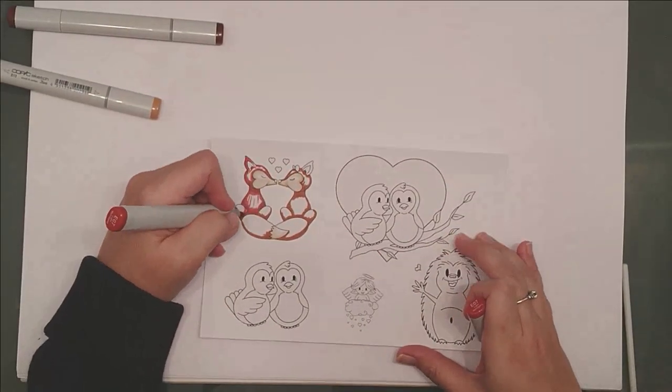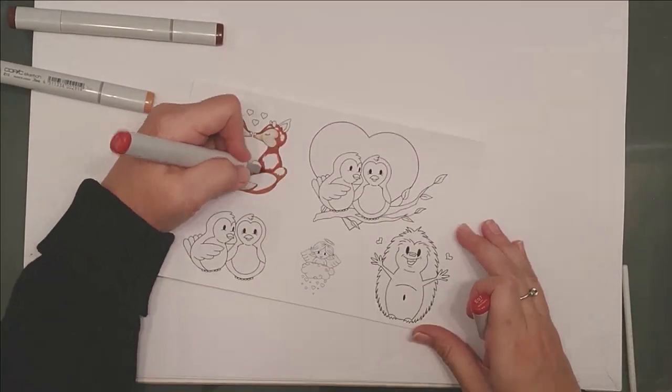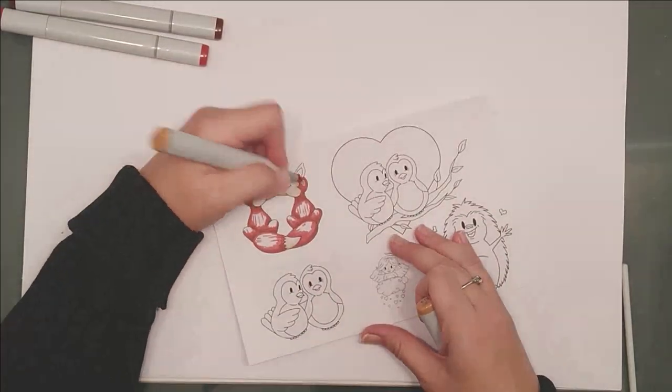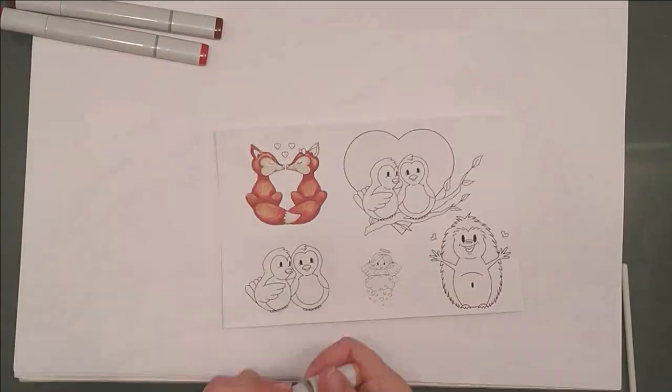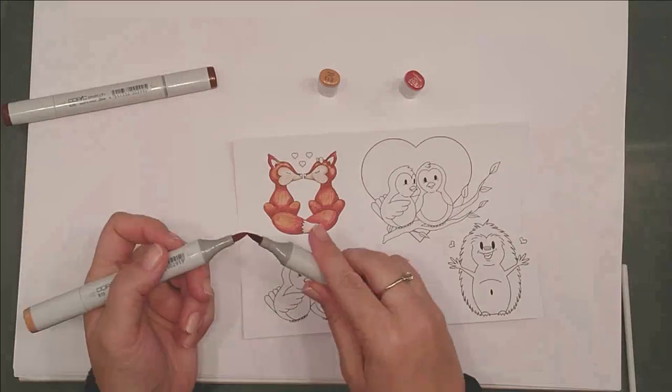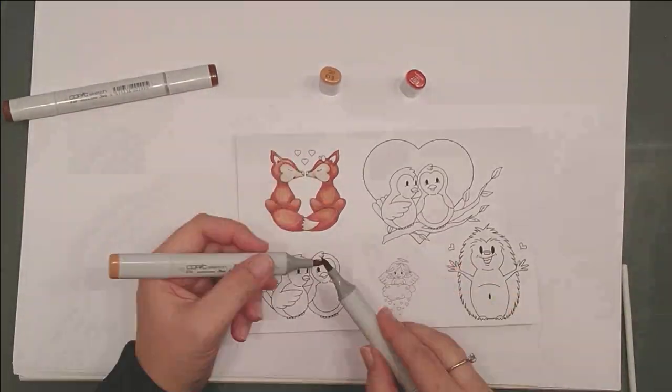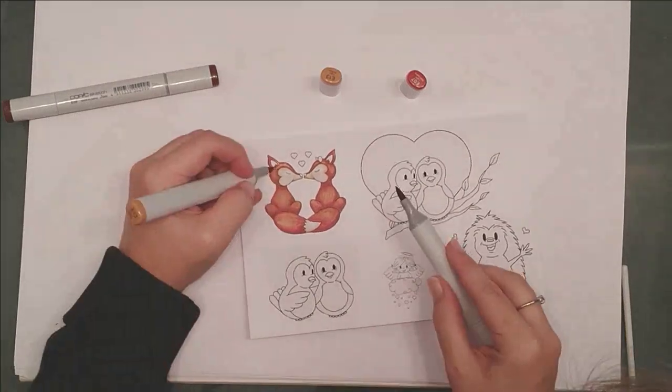To give the fur some texture, I add little flicks of my darkest color, and you'll notice there's a big difference between my midtone and my lightest of the red-browns. I just use the tip-to-tip method to bridge that gap a little bit. It won't hurt your markers at all. You can just clean the tip by coloring on a scrap until it returns to normal.